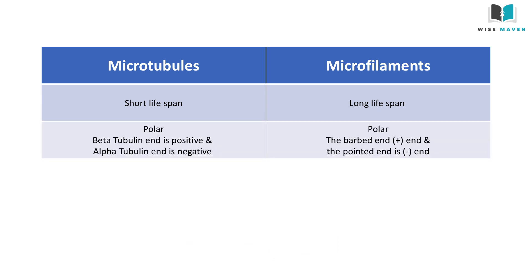Microtubules are polar — that is, the beta-tubulin end is positive and the alpha-tubulin end is negative. The polarity of microfilaments is determined by the binding pattern of myosin S1 fragments in the actin filaments. Therefore, the pointed end is called the negative end and the barbed end is called the positive end.